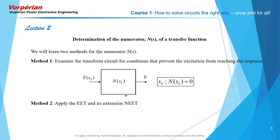Both of these methods depend on the concept of a null in the response. In the first method the null in the response is in the transform domain. In the second method the null in the response is in the real-time domain, obtained by what we're going to learn is called null double injection — whereby you insert two sources inside the circuit and null the response in the real-time domain by cancelling the contribution of one source with respect to the other. I can guarantee you both methods are a lot of fun.